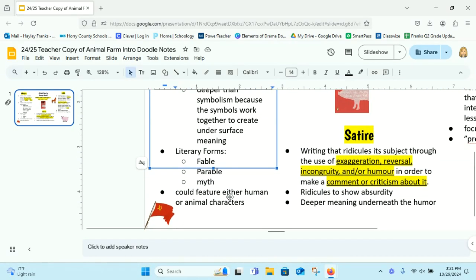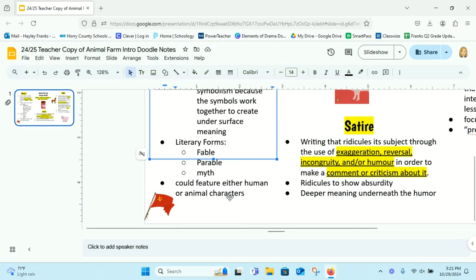Some literary forms of allegories. They can show up as fables, parables, or myths. Allegories can feature either human or animal characters, but I feel like allegories, what we're mostly familiar with, are going to be more animal characters.